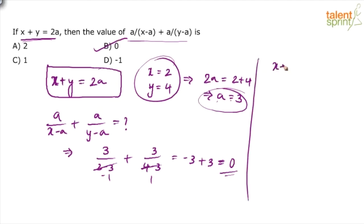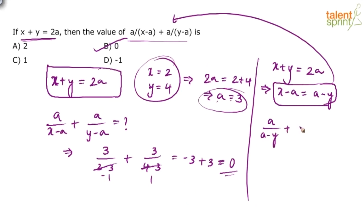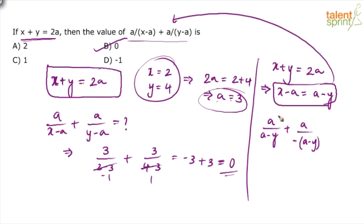If you want to use the traditional method: from x + y = 2a, split as x − a = a − y. Substitute this into the expression: a/(x−a) = a/(a−y). So the expression becomes a/(a−y) + a/(y−a). Taking the minus sign common in the second term: a/(a−y) + a/(−(a−y)) = a/(a−y) − a/(a−y) = 0. This is like m − m, which equals zero.